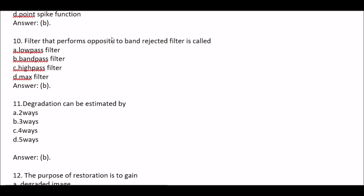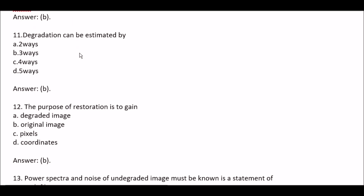Question 10: Filter that performs opposite to band reject filter is called — Option A Low pass filter, Option B Band pass filter, Option C High pass filter, Option D Max filter. Right option is Option B, Band pass filter — filter that performs opposite to band reject filter is called band pass filter. Question 11: Degradation can be estimated by — Option A Two ways, Option B Three ways, Option C Four ways, Option D Five ways. Right option is Option B, Three ways.